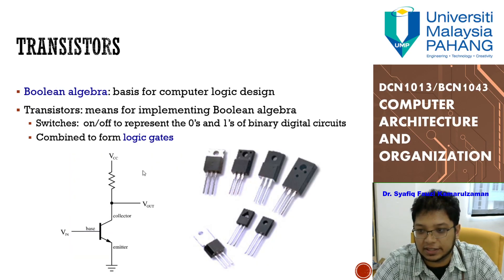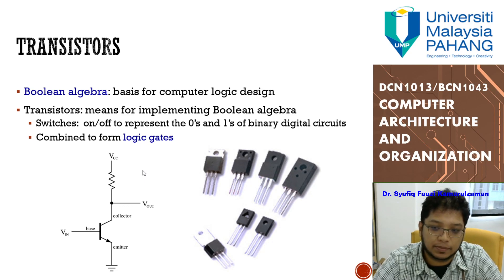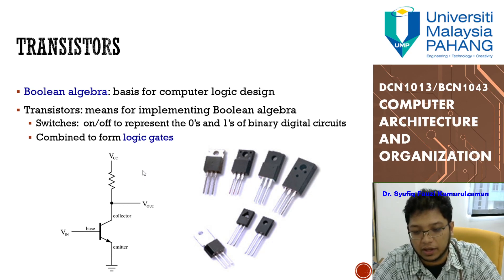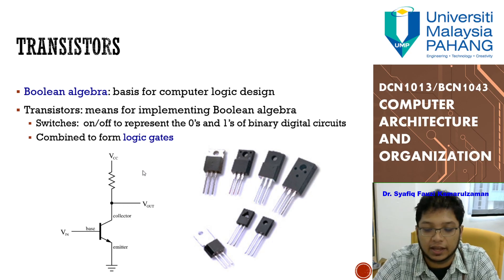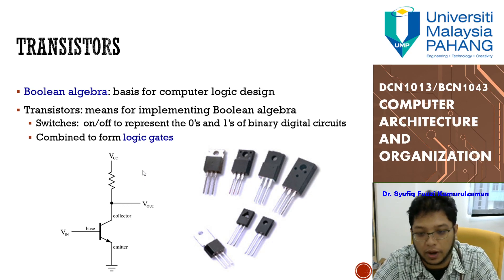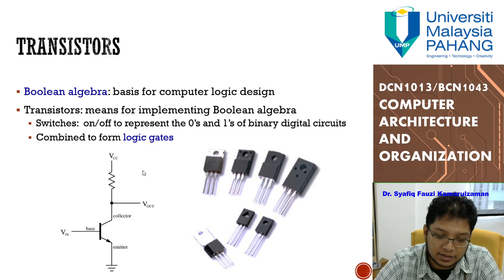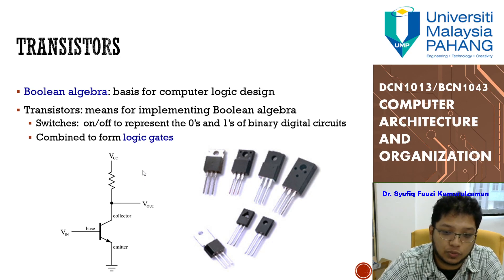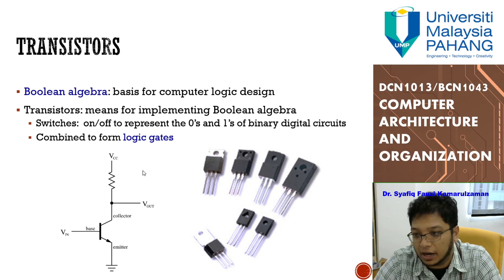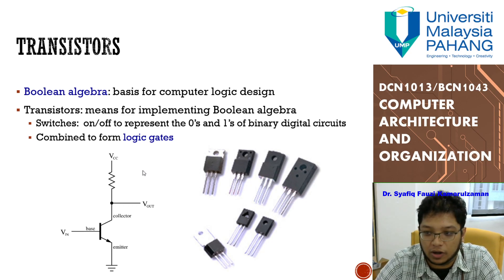Transistors are the basics of digital circuits and the foundation for Boolean algebra, which is the basis for computer logic design. Transistors act like switches — they can change between zero and one. When a transistor turns on, certain portions of the binary become one; when it turns off, those portions become zero. When you combine many transistors, you get what we call logic gates.